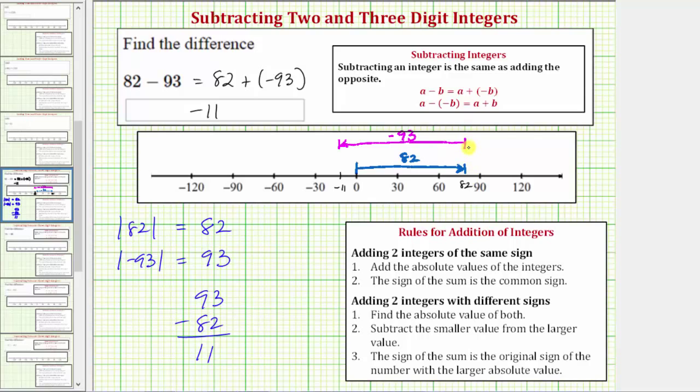82 plus negative 93 which equals 82 minus 93 equals negative 11.